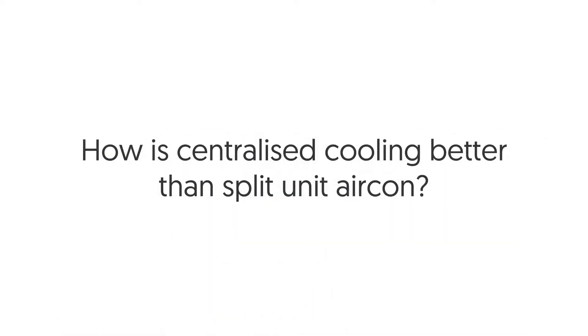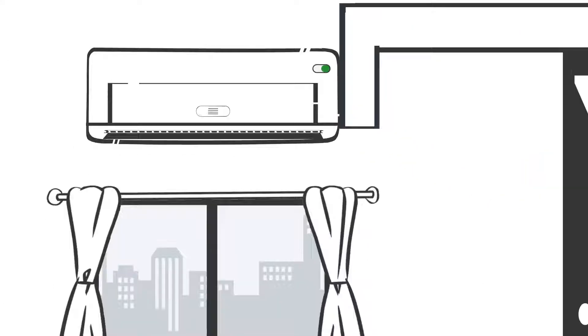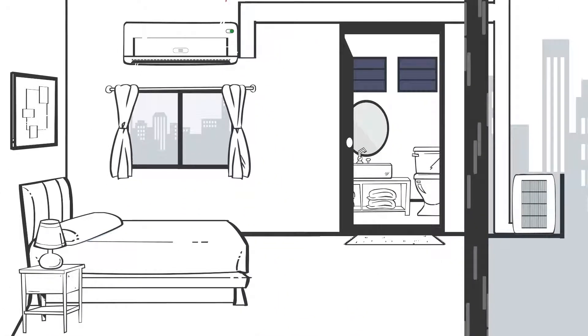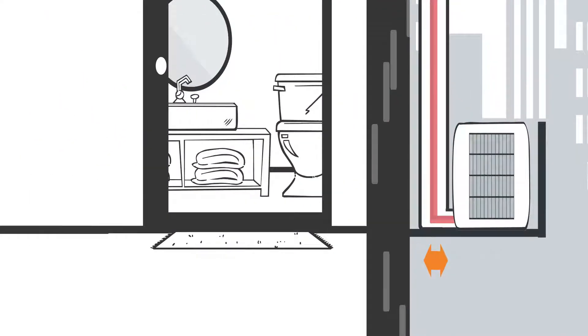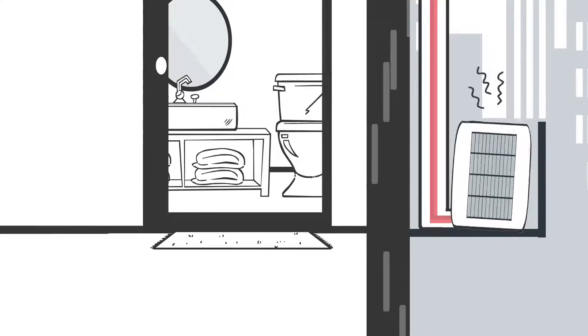How is centralized cooling better? With conventional split units, an outdoor condenser removes heat using refrigerant from your home to the outdoors. Being small and installed close to the wall, these condensers are inefficient due to limited air flow.